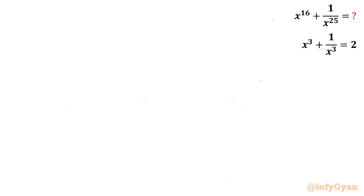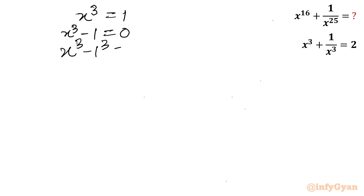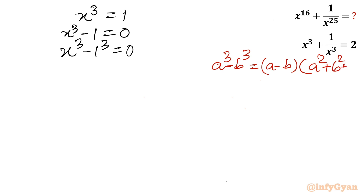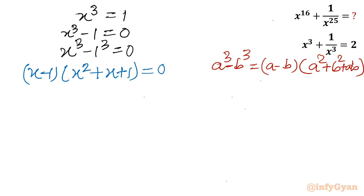Let's derive them first, then we will simplify the expression. Solving x³ = 1, take 1 to the left: x³ − 1 = 0, which we can write as x³ − 1³ = 0. Applying the algebraic identity a³ − b³ = (a − b)(a² + ab + b²), we get (x − 1)(x² + x + 1) = 0.